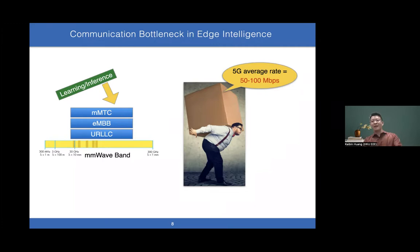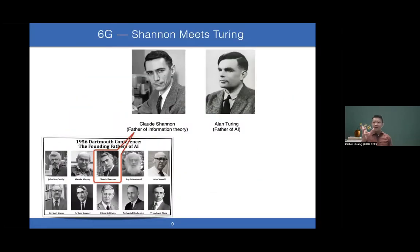We cannot just solve it by brute force. We need a fundamentally new approach. This approach, proposed by many researchers including at KTH, can be called Shannon meets Turing—the fusion of information theory and AI. This isn't coincidental. During their lifetimes, Shannon and Turing were friends and collaborators. We know Claude Shannon as the father of information theory, but he's also considered a founding father of AI. He participated in the 1956 Dartmouth conference where AI was started. This is the theme of 6G: intelligence.